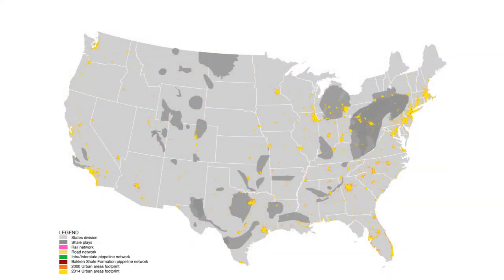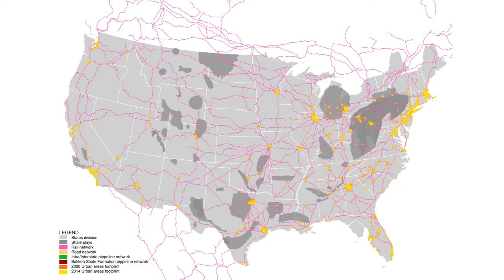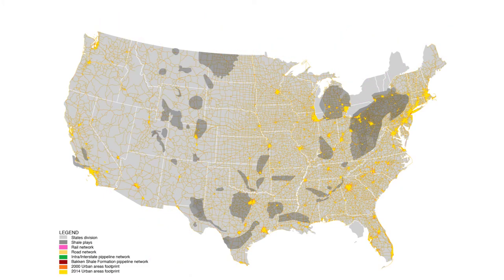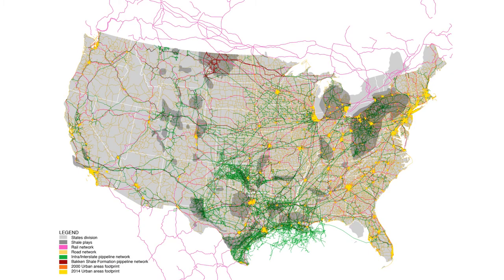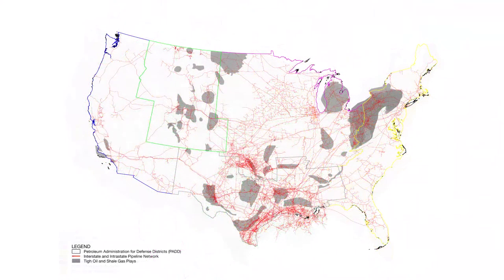If we then start to overlay all the distribution channels of shale oil within the United States — such as rail, road, and pipeline — we can start to deduce the relationships and conclusions for the interdependency of resources in urban cities within the United States.